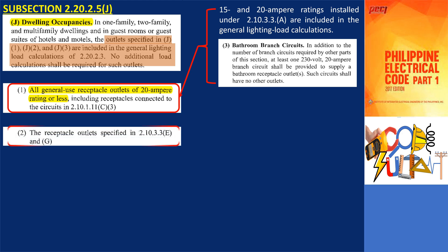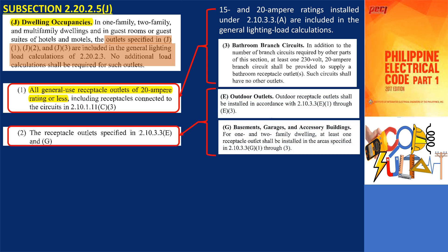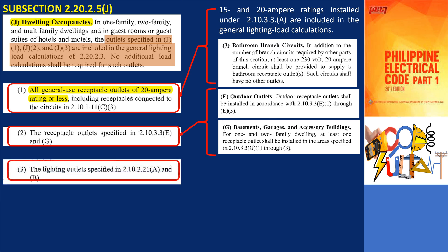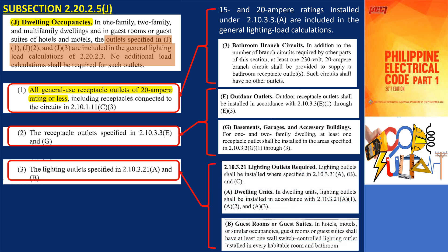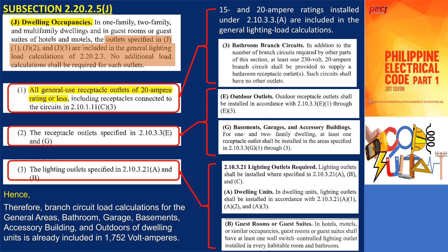For receptacle outlets in J2, specified in 2.10.3.3e and G, these outlets are for the dwelling unit outdoors, basement, accessory building, and garage. In our sample project, this is circuit 5. J3 covers lighting outlets specified in 2.10.3.21a and B — for the dwelling unit's habitable rooms, kitchen, bathroom, hallway, garage, stairs, attic, and basements used for storage and equipment spaces. In our sample project, this is circuit 1. Therefore, branch circuit load calculations for general areas, bathroom, garage, basements, accessory building, and outdoors are already included in the 1,752 volt amperes.